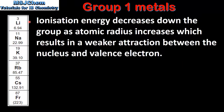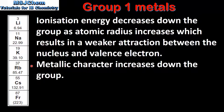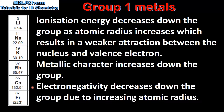Next we look at the trends in ionization energy, metallic character, and electronegativity. The ionization energy decreases down the group as atomic radius increases, which results in a weaker attraction between the nucleus and the valence electron. The metallic character increases down the group as the ionization energy decreases. The electronegativity decreases down the group due to the increasing atomic radius.